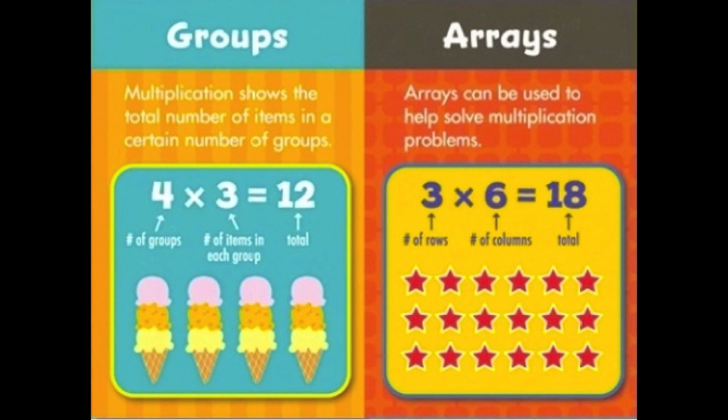Groups and arrays are very useful and important in helping you solve repeated addition or multiplication problems. Multiplication shows the total number of items in a certain number of groups. Look at the example given under groups — you will see a multiplication sentence. The first number represents the number of groups, and the next number represents how many are in each group. We will use this with our repeated addition and multiplication sentences to help us find the total of each example.